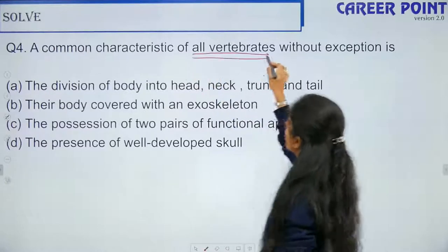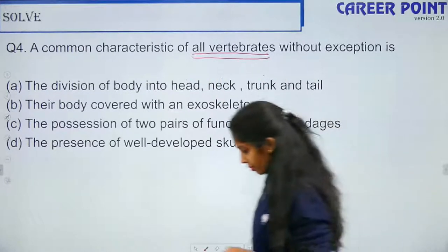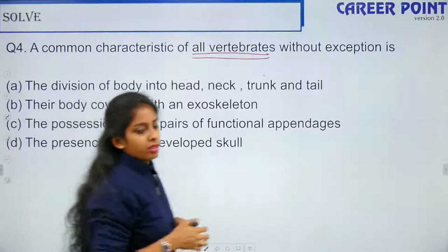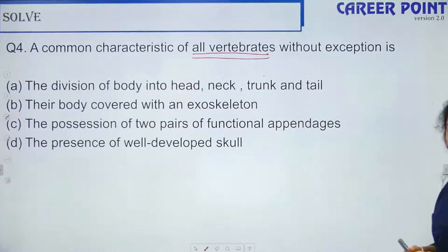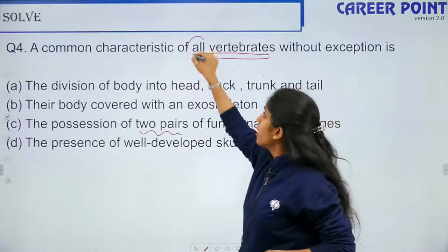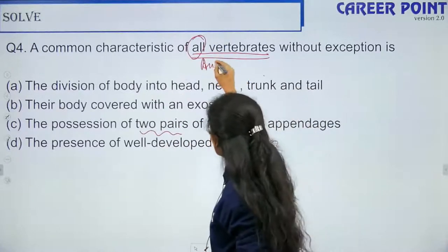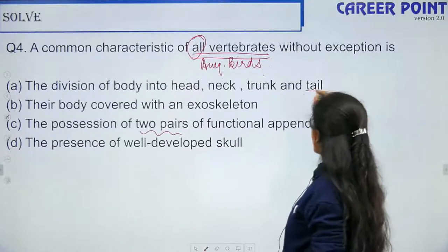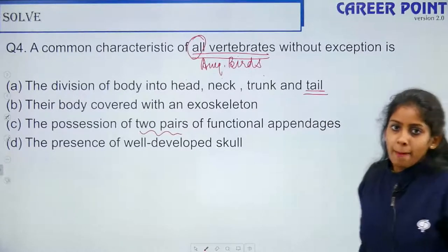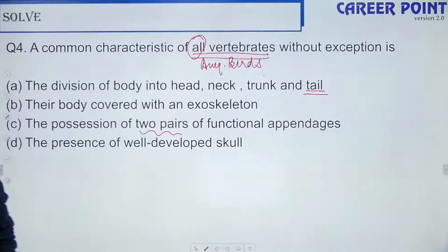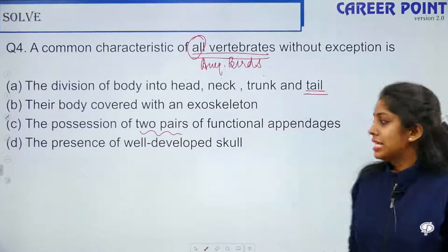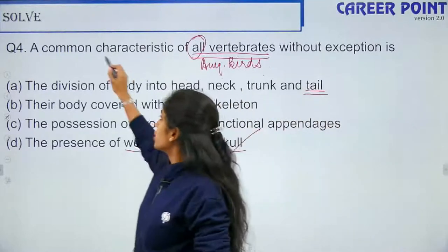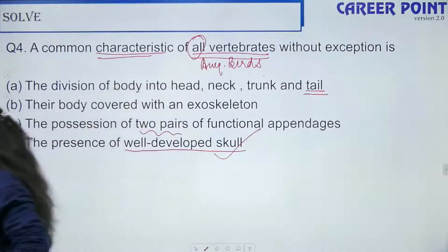Question 4: A common characteristic of all vertebrates without exception — body divided into head, neck, trunk, and tail; body covered with exoskeleton; presence of two pairs of functional appendages; or presence of a well-developed skull? All vertebrates possess a well-developed skull. Answer: option D.